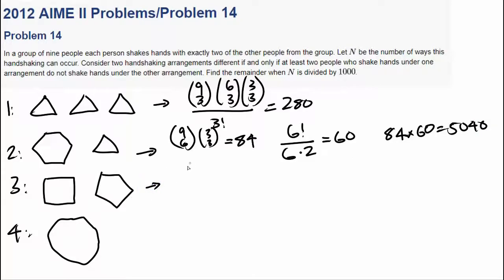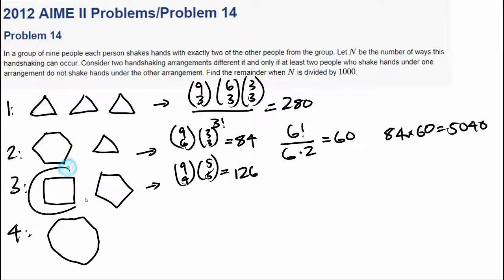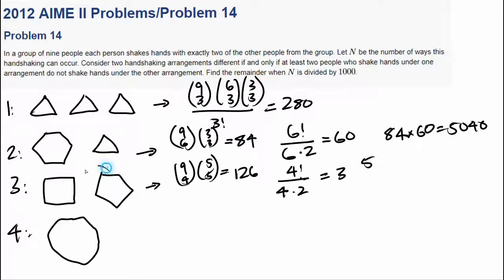For case three, it's 9 choose 4 times 5 choose 5. These are distinguishable rings, so we don't need to worry about switching them around. That's 126. For the four-ring: 4 factorial divided by 4 rotations and 2 reflections equals 3. For the five-ring: 5 factorial divided by 5 rotations and 2 reflections equals 12. So 126 times 3 times 12 equals 4,536.